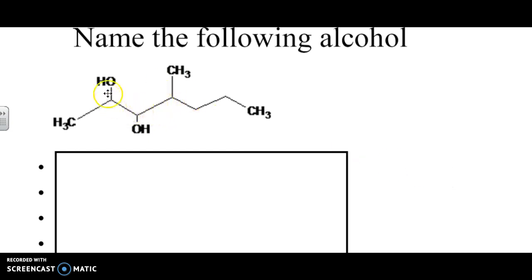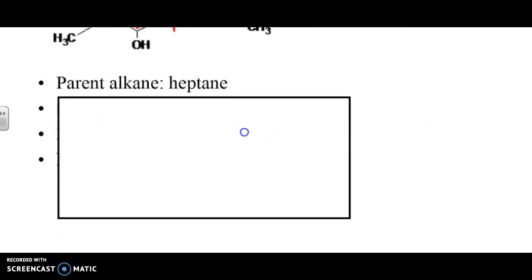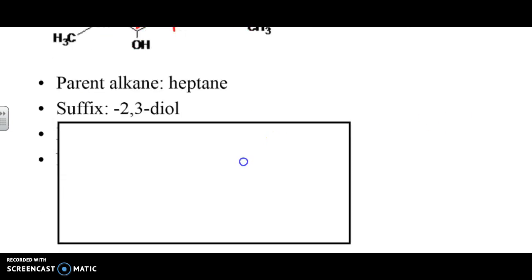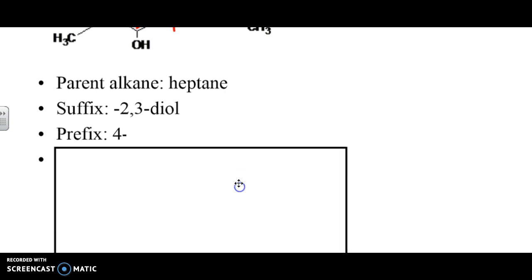With this example right here, we can see there's an alcohol at spot 2 and 3, which is going to make it a diol. 4, 5, 6, 7. So, yet again, in this case, we've got a 7-carbon chain. So, it's going to be a heptane. No double bonds or triple bonds to worry about. We see that the suffix is going to be a diol at spot 2 and 3. We've got a prefix of 4, and this is where our methyl group is going to be.